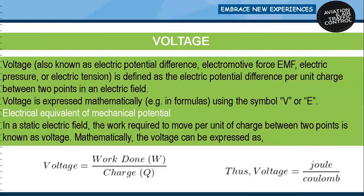Voltage: it is also known as electric potential difference, electromotive force, electric pressure, or electric tension. It is defined as the electric potential difference per unit charge between two points in an electric field. Voltage is expressed mathematically using the symbol V or E, and it is the equivalent of mechanical potential.